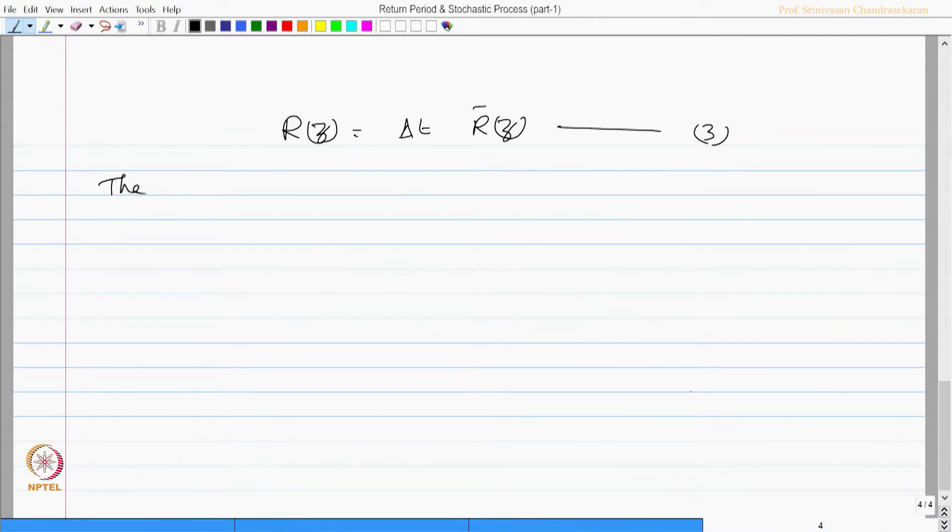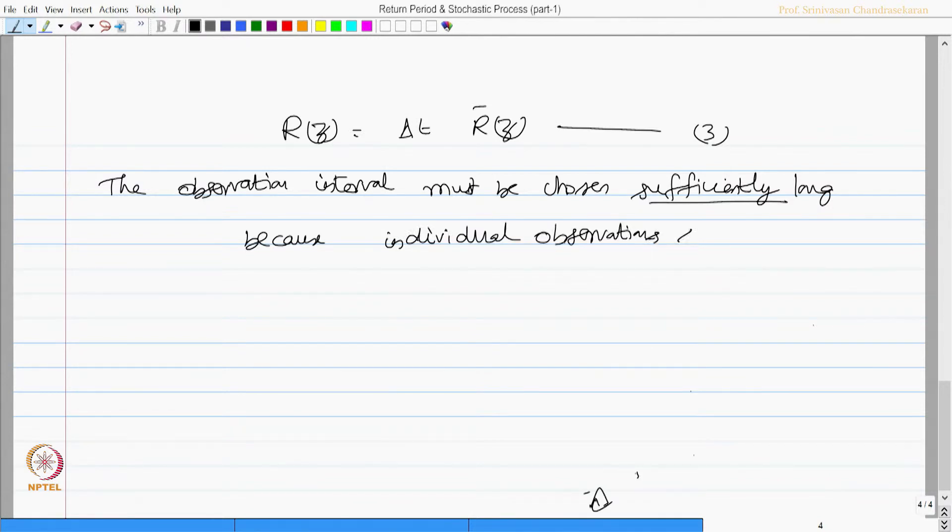Interestingly, the observation interval must be chosen sufficiently long. Why? Because individual observations should be approximately independent.